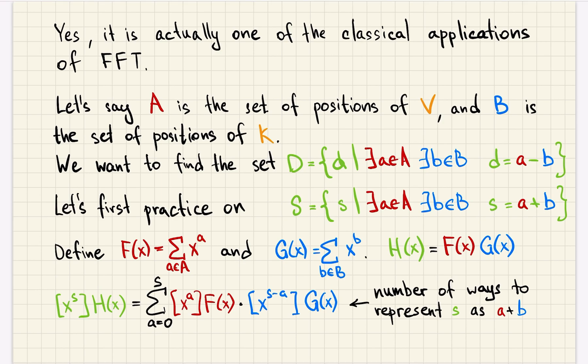Let's look at the product of these polynomials. Then if we look at coefficient before x to the s power of f and g it will be equal to the sum over a from 0 to s, coefficient before x to the power of i in f multiplied with coefficient before s minus a in g.